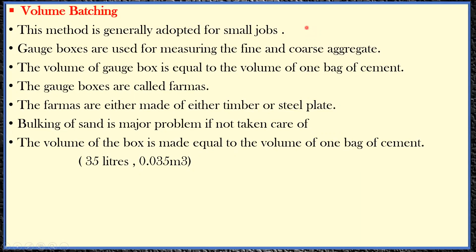Volume batching is generally adopted for small works. In local construction you will usually see volume batching being used. This method is typically adopted for small buildings such as G+1, G+2, or G+3. Gauge boxes are used for measuring the fine and coarse aggregate. The volume of a gauge box is equal to the volume of one bag of cement.